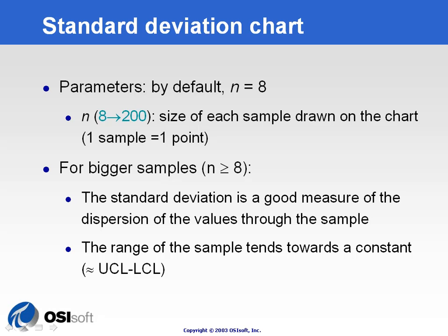The standard deviation chart, or sigma chart, is really similar to the R-chart in trying to estimate the variability of the process. The problem with the R-chart is that when you're trying to take a large sample, first the minimum and the maximum value are not that related at all, and also the range tends toward a constant which would be the UCL minus the LCL value.